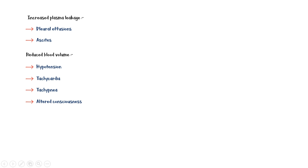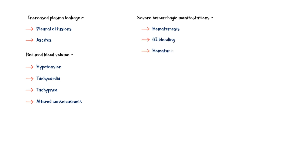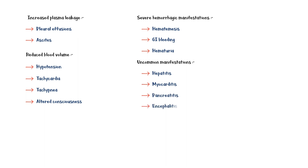Some individuals develop severe hemorrhagic manifestations, including hematemesis, gastrointestinal bleeding, and hematuria. Some uncommon manifestations of severe Dengue include hepatitis, myocarditis, pancreatitis, and encephalitis.